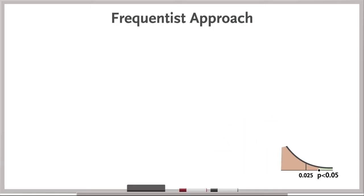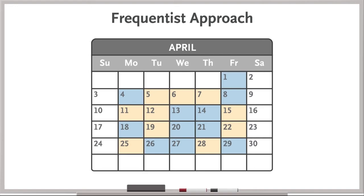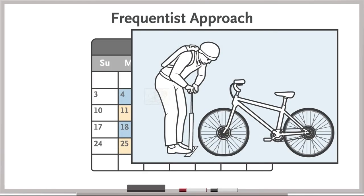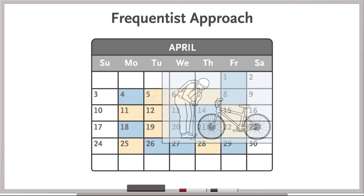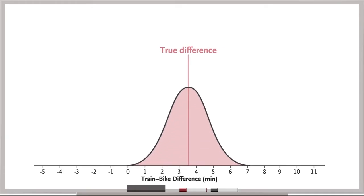But what if there is no single true difference? After all, lots of things can change day to day. Sometimes there are delays on the train. Some mornings you might have bike trouble. To account for the possibility that there isn't a single fixed value, and that there is actually a distribution of the effect size, you turn to a Bayesian approach.